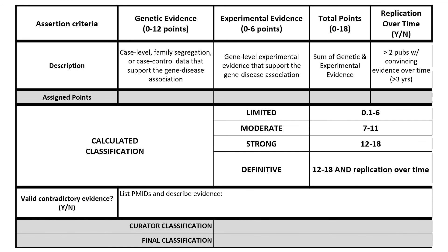To determine the appropriate gene disease clinical validity classification for a given gene disease pair, one must review both genetic and experimental evidence available supporting and/or contradicting the gene disease relationship. ClinGen has developed a scoring system to guide the evaluator to a preliminary classification. This scoring system is reviewed in detail in another video available on our channel.